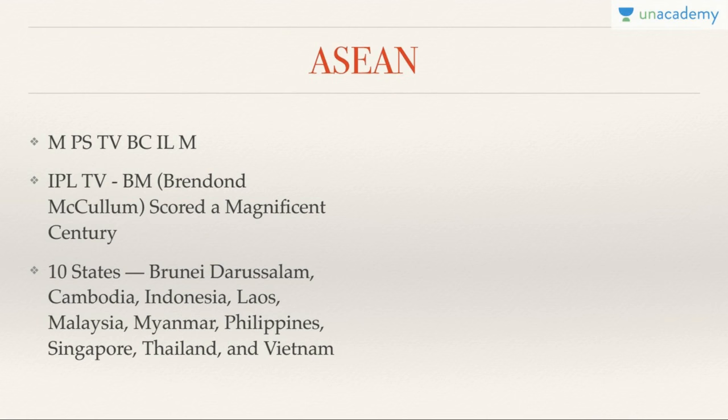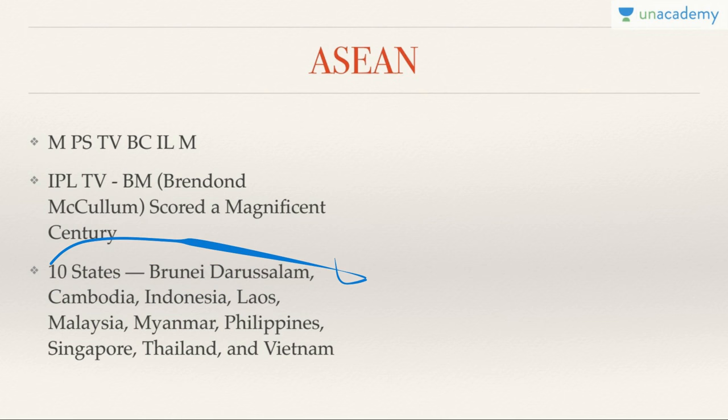When it comes to ASEAN — that is the Association of Southeast Asian Nations — just always remember this simple mnemonic: Brunei, Cambodia, Indonesia, Laos, Malaysia, Myanmar, Philippines, Singapore, Thailand, and Vietnam. Everybody knows there are 10 members of ASEAN, and the trick is to remember all 10 without forgetting even a single one.